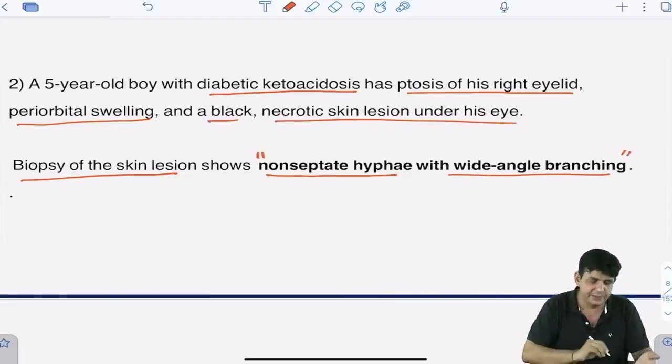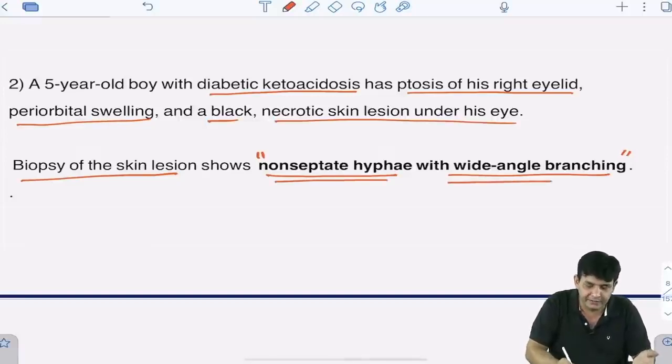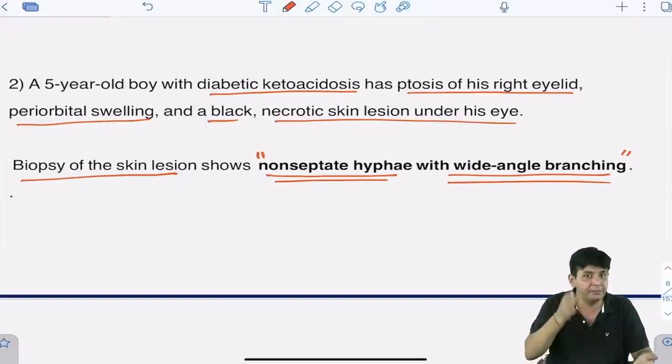What is the answer to this question? Very right! The answer is mucormycosis. The greatest hint is non-septate hyphae with wide-angle branching, and it can be perpendicular also. This is obviously rhinocerebral type and the orbit is also involved.